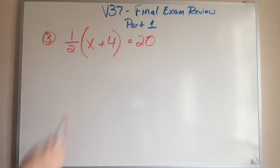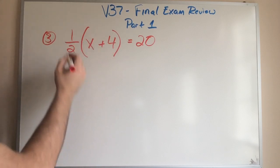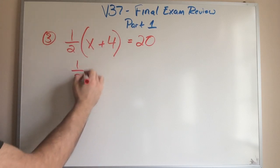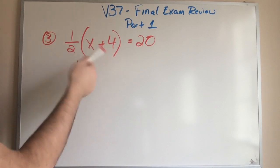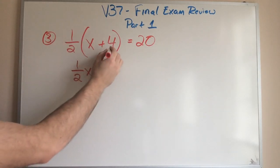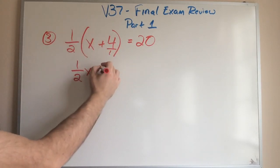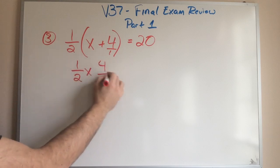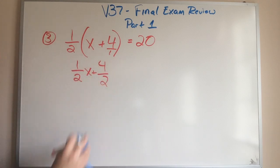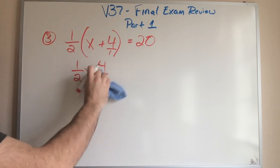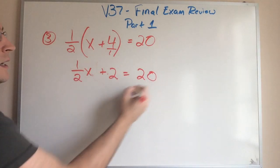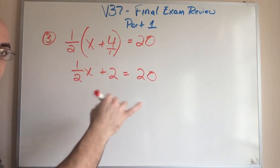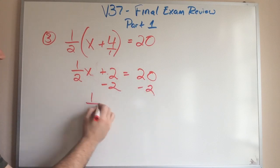So I have to distribute the one half to everything inside. So one half times X is just simply one half X and one half times four. Remember when we multiply fractions with regular integers, we only multiply the numerator times the numerator because this is really four over one. So this is just going to be four over two or plus four over two. But four over two is just simply two if I were to simplify. So this is one half X plus two equals 20. I'm still going to solve the same way as I solved the first equation. Minus two on both sides and I'm left with one half X equals 18.